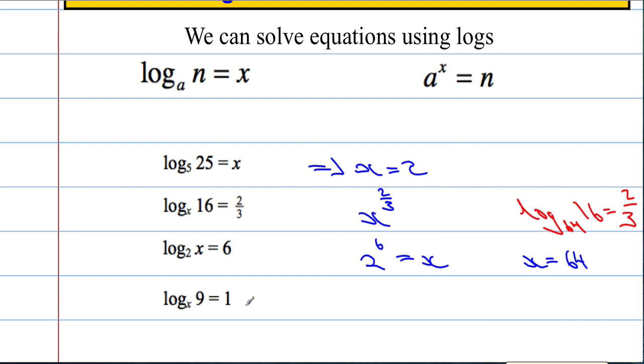And then finally, the power of x that gives an answer of 9 equals 1. So x to the power of 1 equals 9. Well, that means that x must equal 9. Because 9 to the power of 1 is 9.